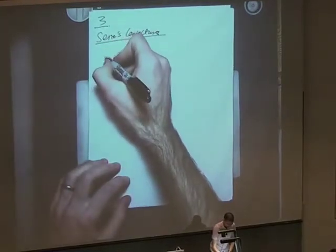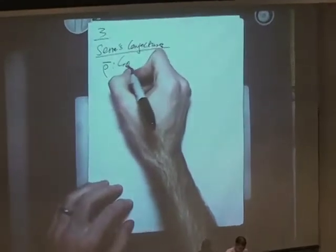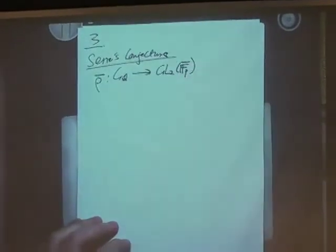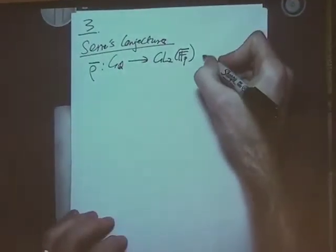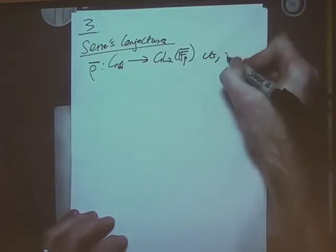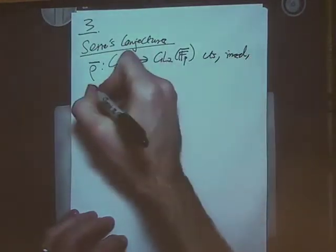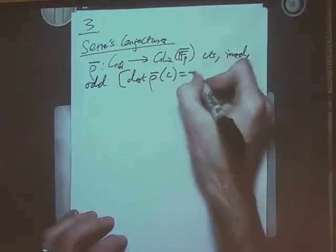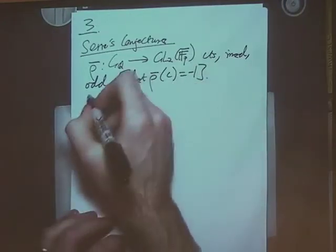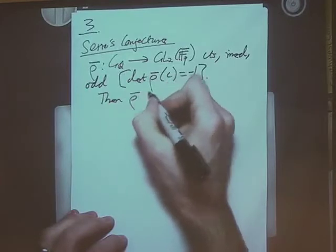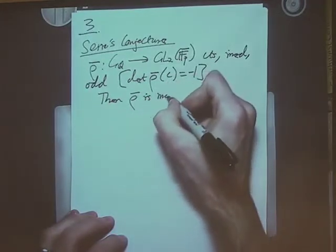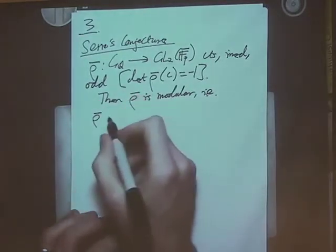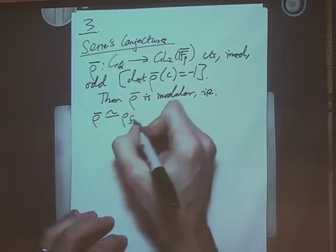I want to take a mod p Galois representation, maybe with algebraically closed coefficients. Let's assume that this is continuous, irreducible, and odd — which means that if I take a complex conjugation, the determinant is minus one. So then the conjecture is that rho-bar should be modular, in the sense that it arises as the reduction mod p of some Galois representation coming from some modular form.